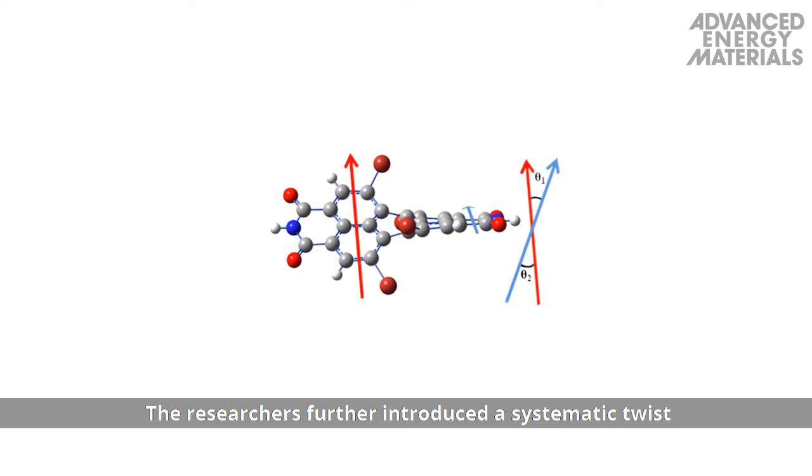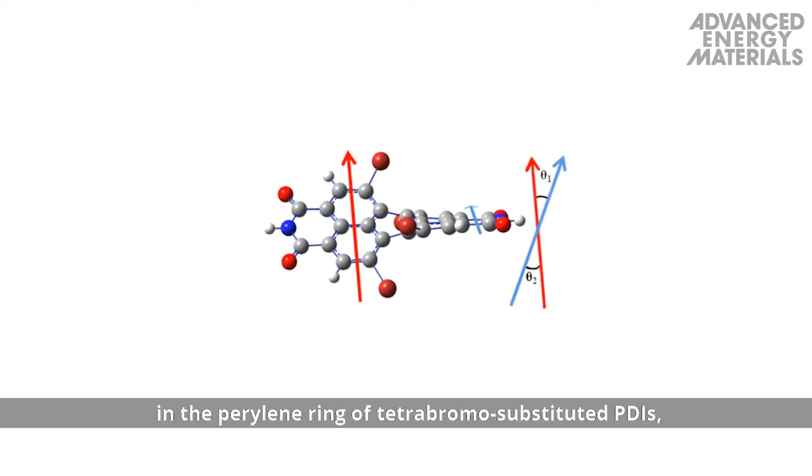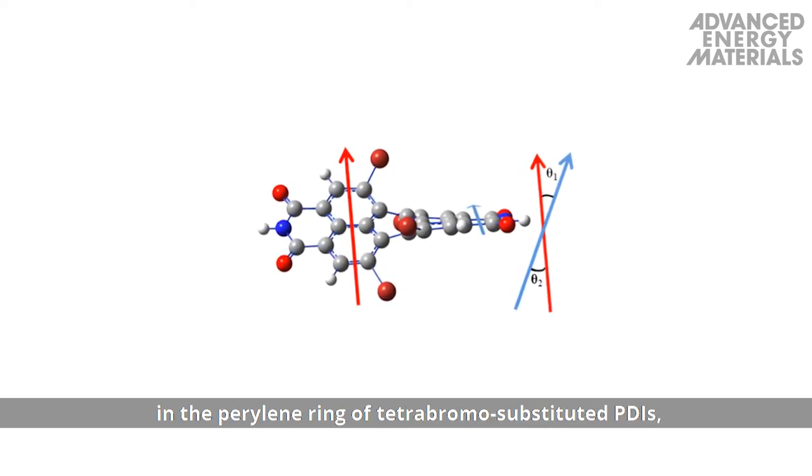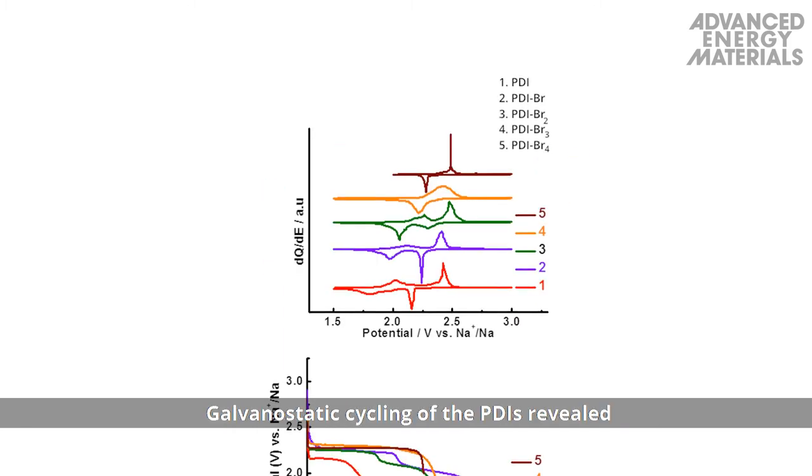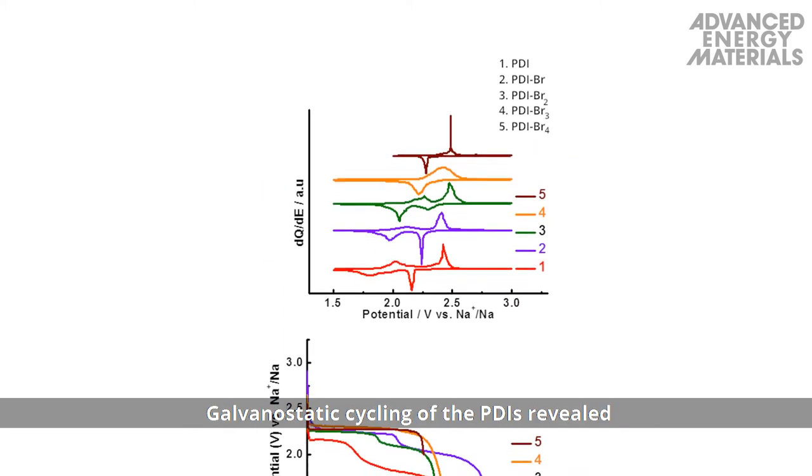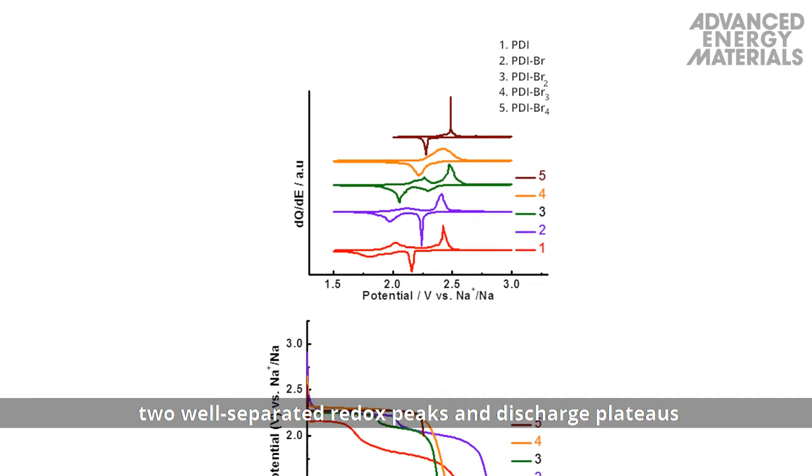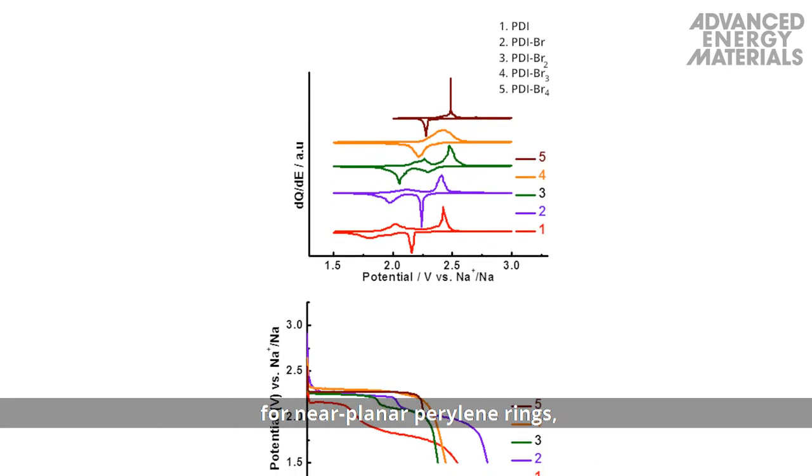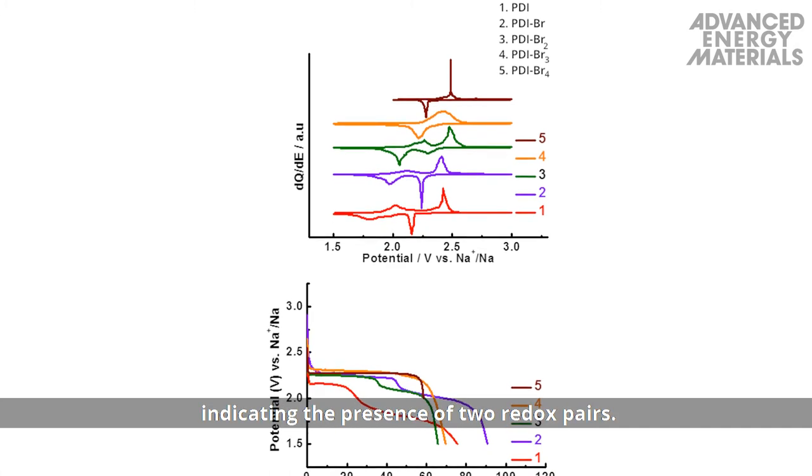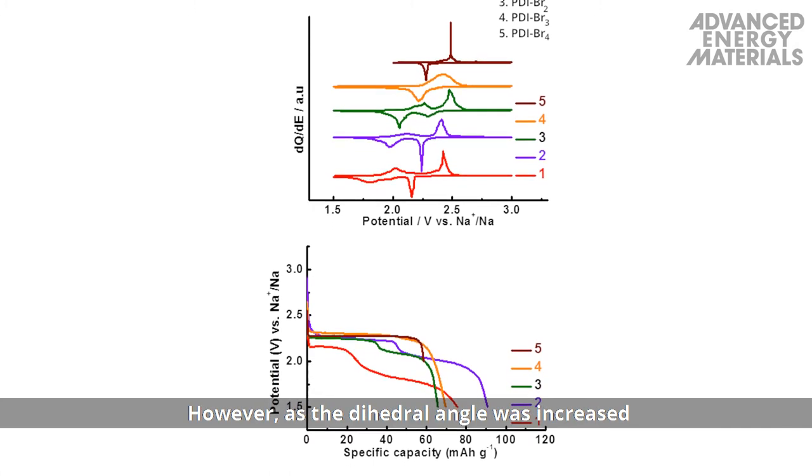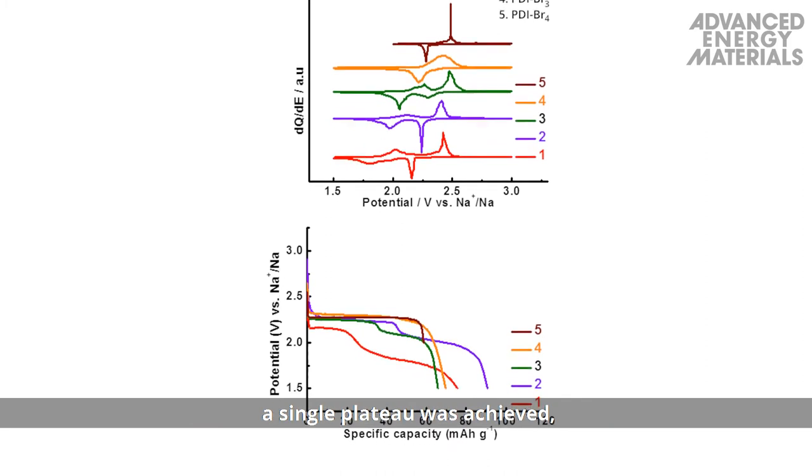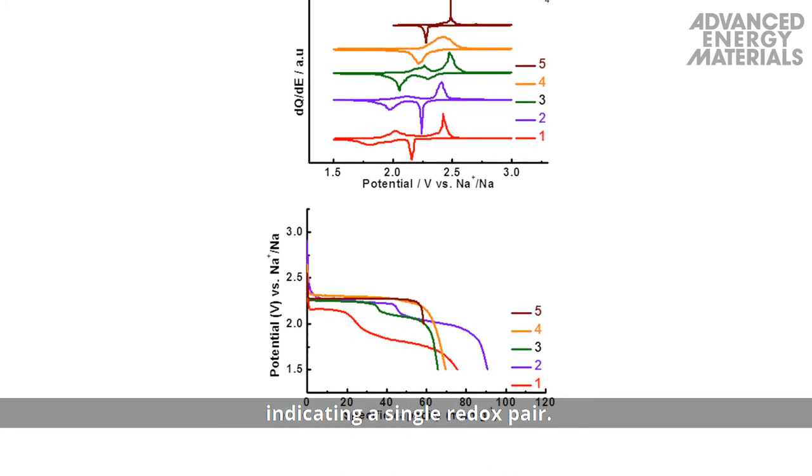The researchers further introduced a systematic twist in the perylene ring of tetrabromo-substituted PDIs, thereby tuning the redox properties. Galvanostatic cycling of the PDIs revealed two well-separated redox peaks and discharge plateaus for neoplanar perylene rings, indicating the presence of two redox pairs. However, as the dihedral angle was increased, a single plateau was achieved, indicating a single redox pair.